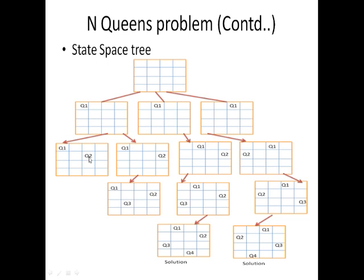Since queen 2 placed in the 3rd position cannot proceed to the next level, we move queen 2 to the 4th position. When queen 2 is moved to the 4th position, we are able to place queen 3 in the 2nd position, because no queen should be placed in the same row, column, or diagonal. However, queen 4 cannot be placed, so this step is stopped, and we go for placing queen 1 in the next position.